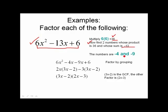And then look in the middle there, whose sum is negative 13. Well, the numbers are negative 4 and negative 9, aren't they?